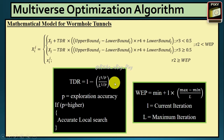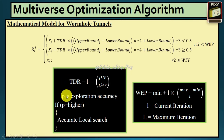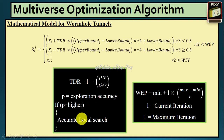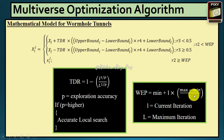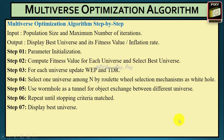Upper bound means the maximum limit and lower bound means the minimum limit. We can compute the values for TDR and WEP using these equations. Here, P is the exploration accuracy — if the value for P is higher, it means you get a greater local search. Small L is the current iteration and capital L is the maximum iteration.